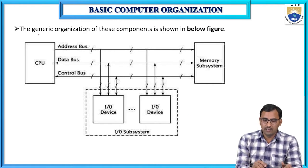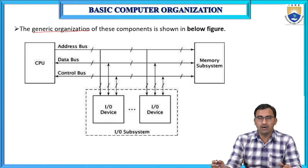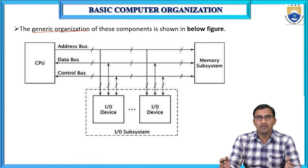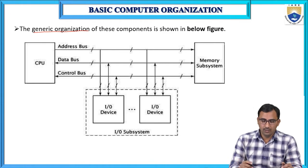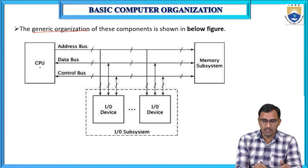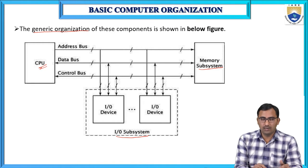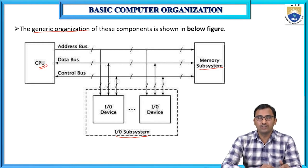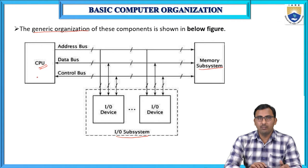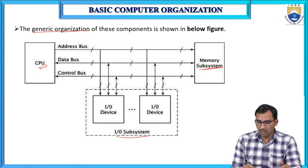Here we can see the generic organization of these components — how all the different components we have seen previously are connecting with each other. We have different subsystems: this is the CPU (central processing unit), the memory subsystem, and the I/O subsystem. The CPU can communicate with the memory subsystem or I/O subsystem.